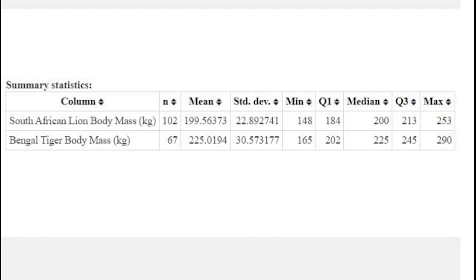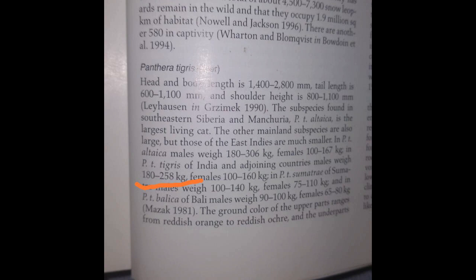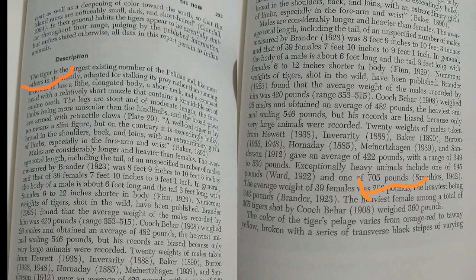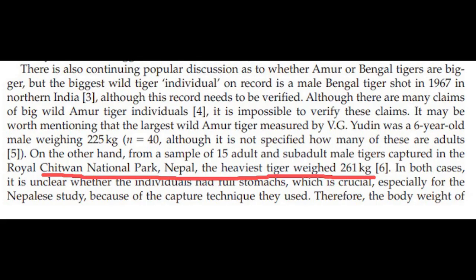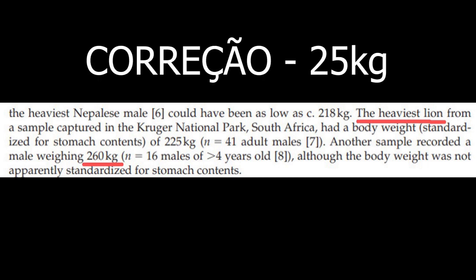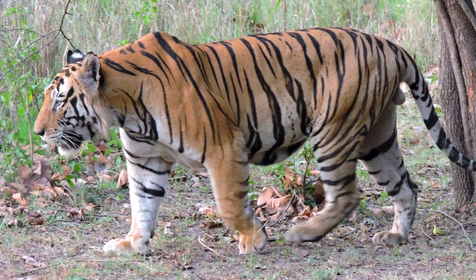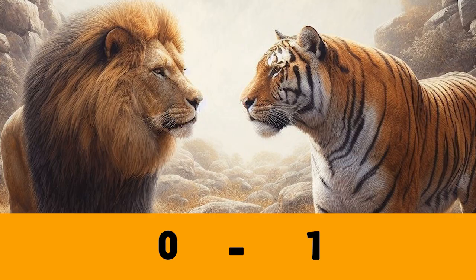Outra estatística diz que a média dos leões era de 200 quilos e dos tigres era de 225 quilos. Livros científicos dizem que o peso do leão varia de 150 a 250 quilos, e dos tigres de Bengala de 180 a 258 quilos. Há relatos de caça que esses animais ultrapassaram 300 quilos, sendo que os maiores pesos são os dos tigres. Mas cientificamente comprovado, os maiores exemplares de ambos tinham em torno de 260 quilos. Em média, os tigres são mais pesados em torno de 20 quilos. Os tigres tendem a ser mais compridos e mais pesados que os leões, e os leões mais altos no ombro. No aspecto geral, ponto para o tigre.